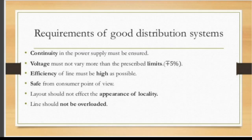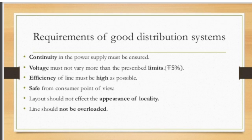Requirements of a good distribution system: The first requirement is continuity of power supply. A good distribution system must be reliable, giving continuous power to consumers. Continuity of power supply is very important and must be ensured for any good distribution system.